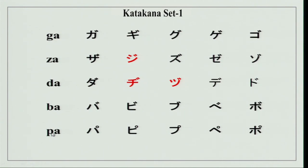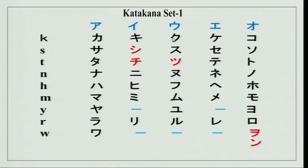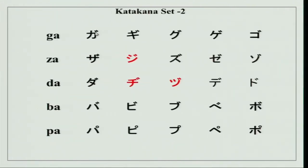Now you will notice that in hiragana, these sounds — these letters — were actually made from the Set 1 symbols. Similarly, over here I will go back to Set 1. You will see ka, ki, ku, ke, and ko. If you just put this small symbol on top of ka, ki, ku, ke, ko, it becomes ga, gi, gu, ge, and go. Similarly, for sa, if you put this symbol, the sound becomes za, zi, zu, ze, and zo. I will write it for you once, then it will be easier to understand.